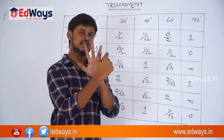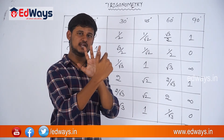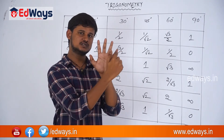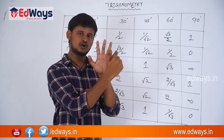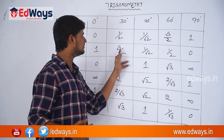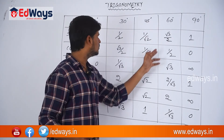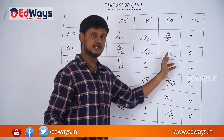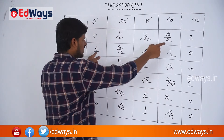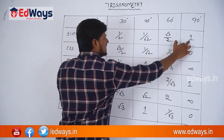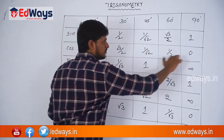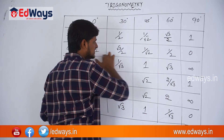While finding cos values, just come from the other direction — little finger to thumb. So cos 0° = 1, cos 30° = √3/2, cos 45° = 1/√2, cos 60° = 1/2, cos 90° = 0. That means for cos you just write the sin values in reverse: 1, √3/2, 1/√2, 1/2, 0. So this is sin and this is cos.